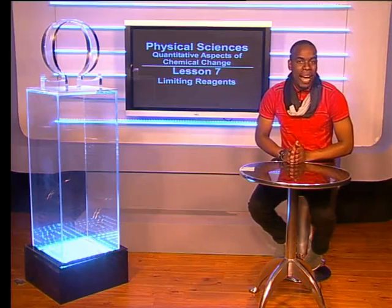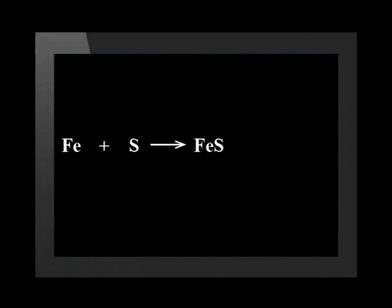Let us consider the reaction between iron and sulfur. Here is the balanced equation for the reaction. The equation is balanced, so the ratio in which iron reacts with sulfur is 1 to 1. This means that for every 1 mole of iron used, 1 mole of sulfur will react with it.